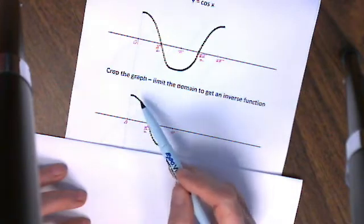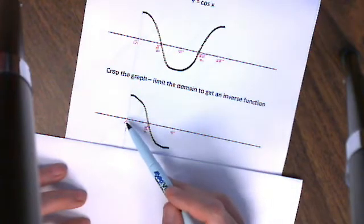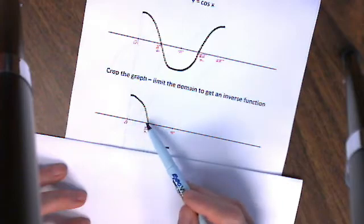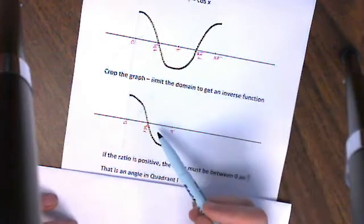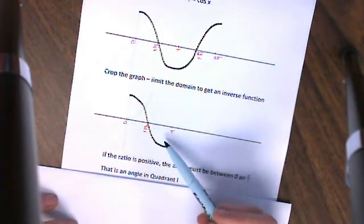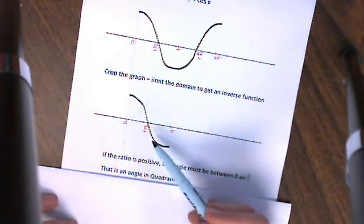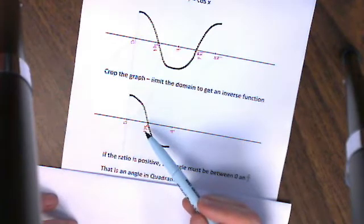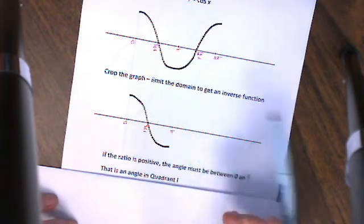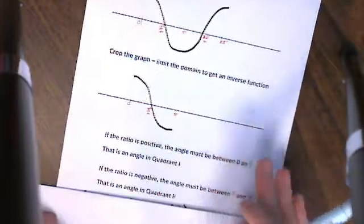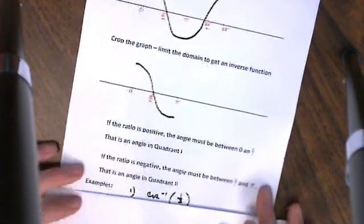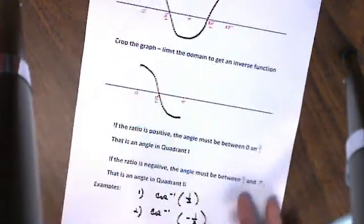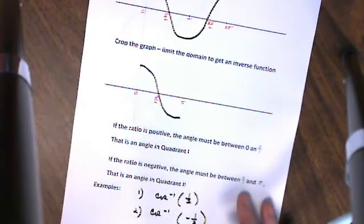My ratios are positive when my angle is between 0 and pi over 2 — that's an angle in quadrant 1. When my graph falls below the x-axis, those are negative ratios, and I get negative ratios between pi over 2 and pi — that would be an angle in quadrant 2. This is going to cause me to use reference angles if my ratio is negative. Let's take a look at a couple of examples for the inverse cosine function.